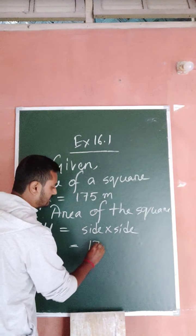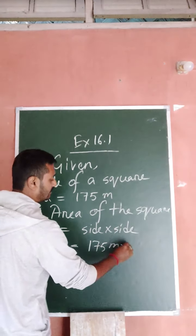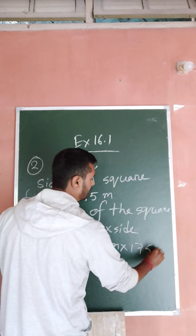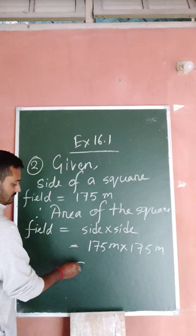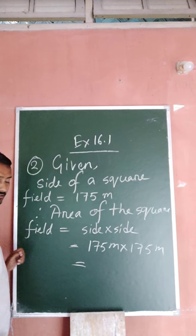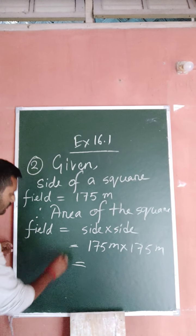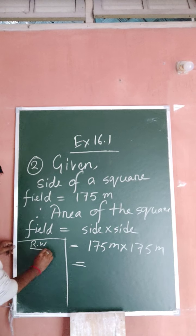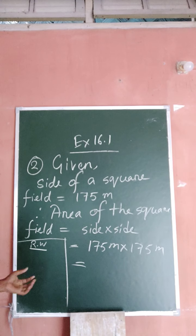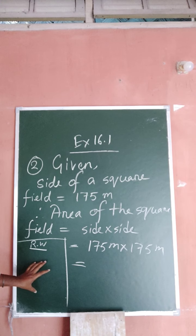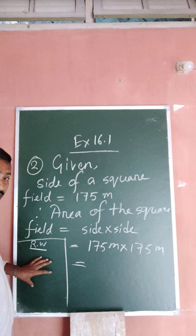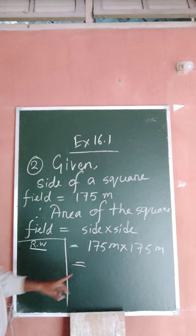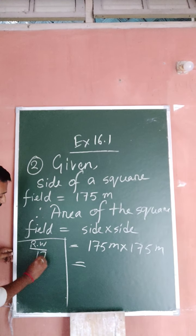So side is 175 meters into 175 meters. Now we have to do rough work here. We will do the rough work, and on the basis of this rough work we will find the answer. So do the rough work very carefully.